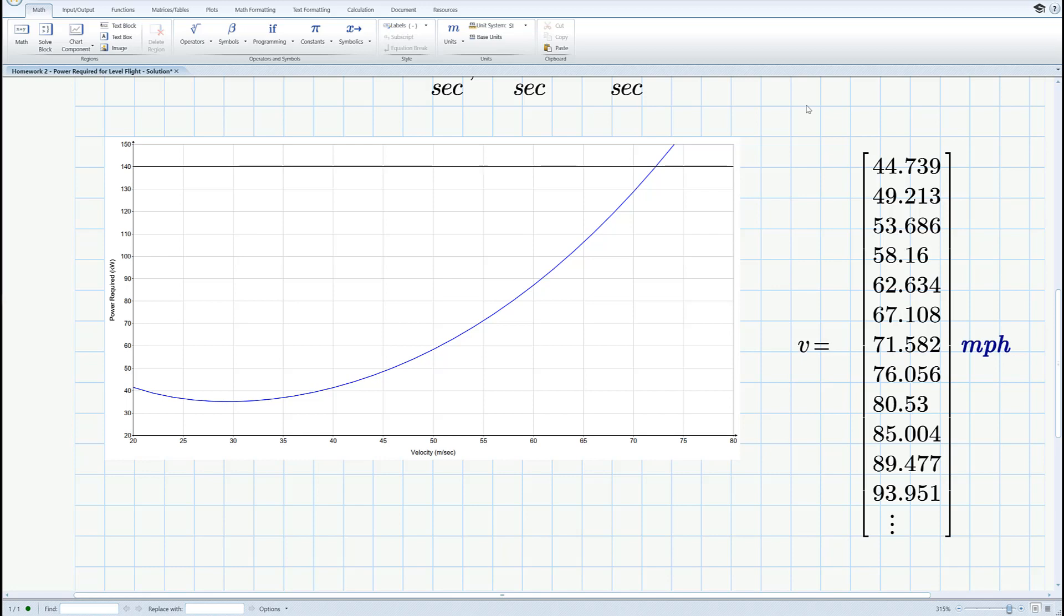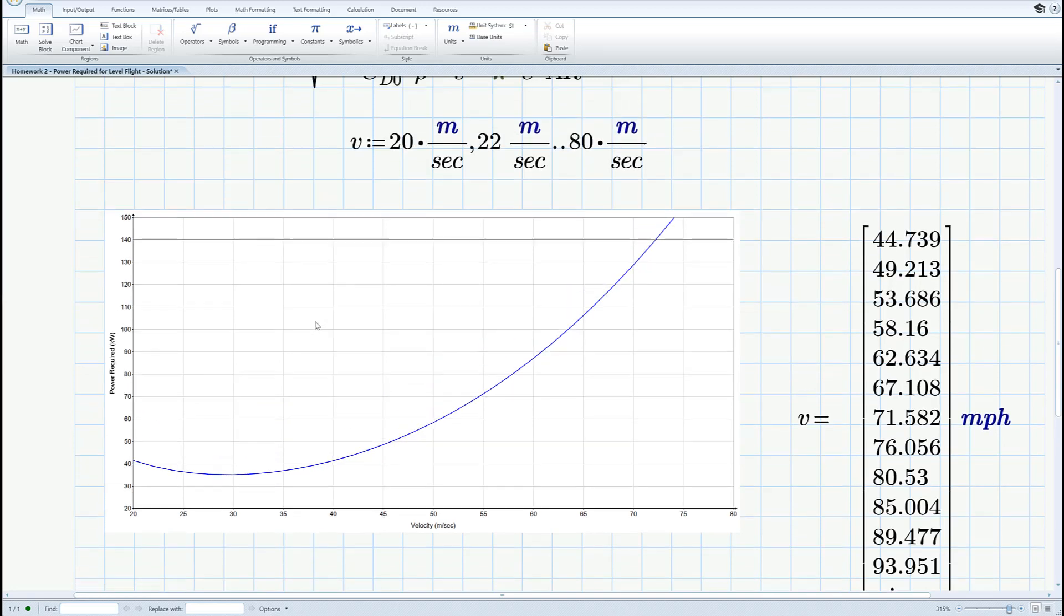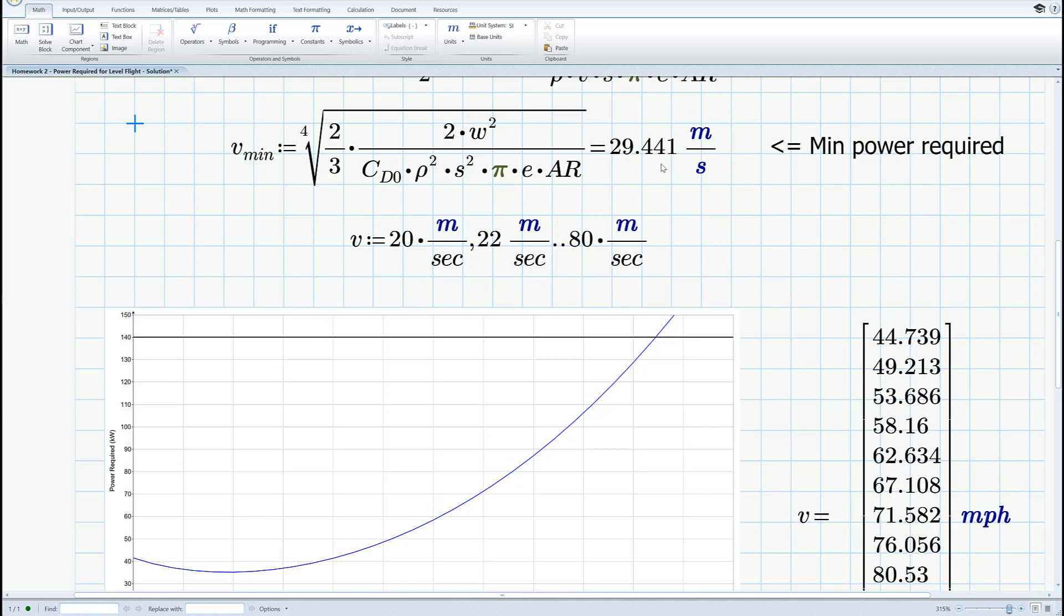Propellers on light aircraft are probably eighty or ninety percent efficient so I started with the brake horsepower of the engine and then reduced it a little bit to account for the efficiency losses in the propeller. That's where the hundred and forty kilowatts came from. And it looks right here like the minimum power required to fly happens at about 29 meters a second and sure enough there it is.